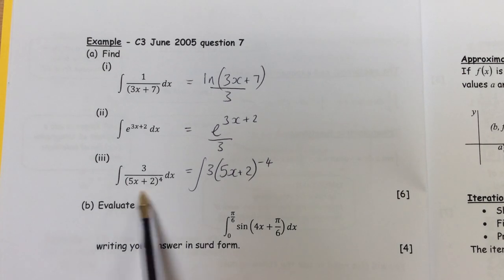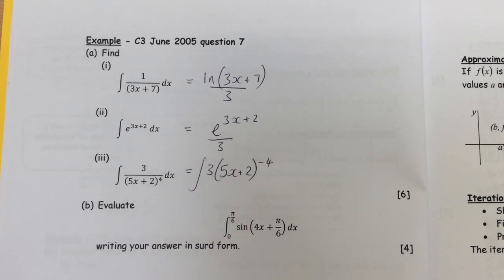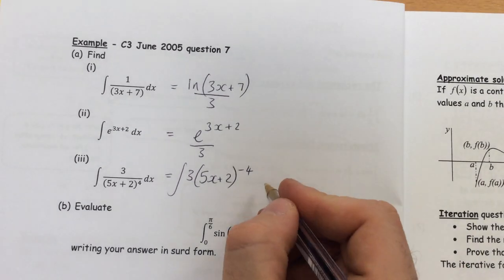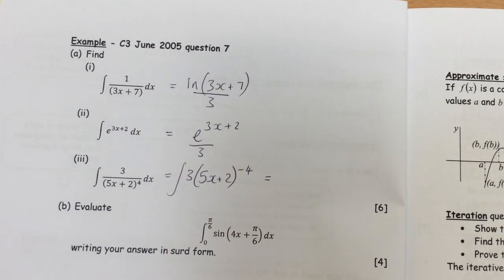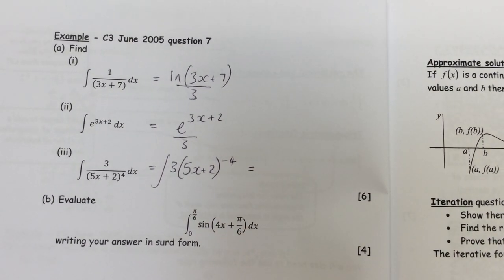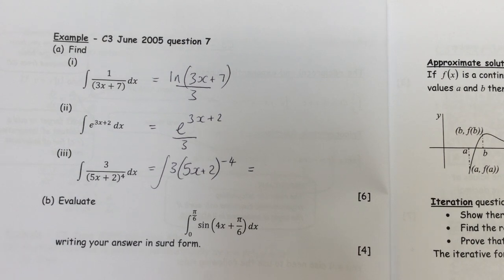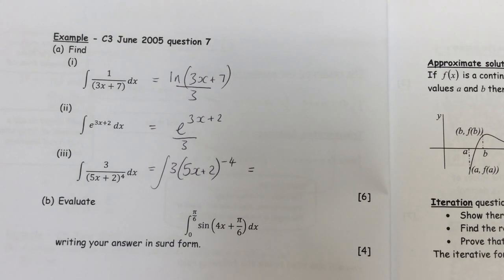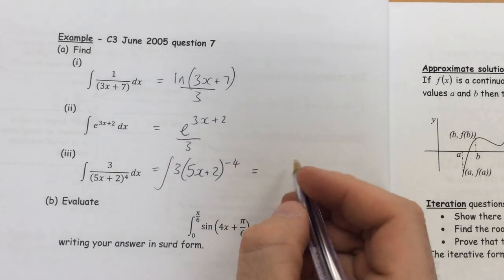So if you get something divided by a power, bring it to the top and put a minus power there, and then integrate that. So what is the method of integrating? Just the basic one from year 12. Bring, add a power and divide by that new one. So if I add a power to this, what's it going to become?